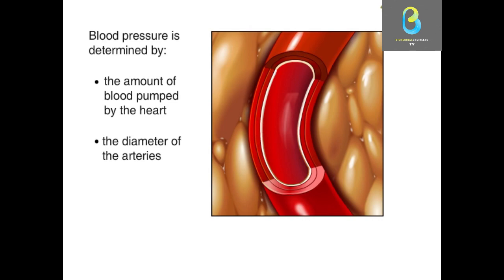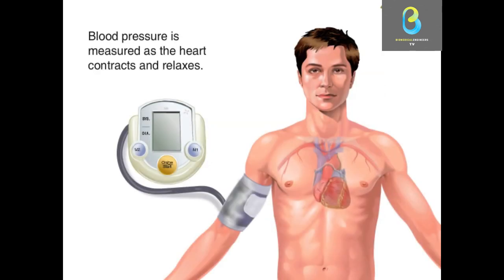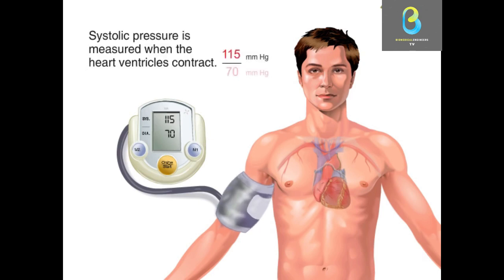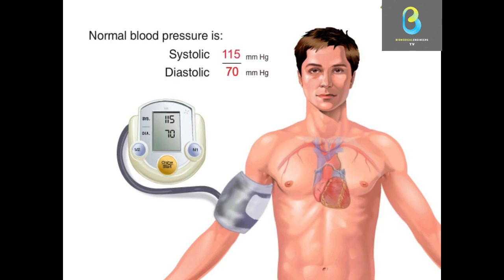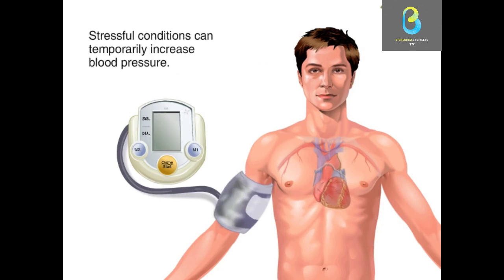Pressure in the cuff is then released at a particular rate. When it reaches a level which is below the systolic pressure, a brief flow occurs. If the cuff pressure is allowed to fall further, just below the diastolic pressure value, the flow becomes normal and uninterrupted. The measurement consists of systolic, diastolic and mean pressure.